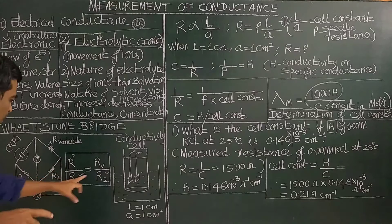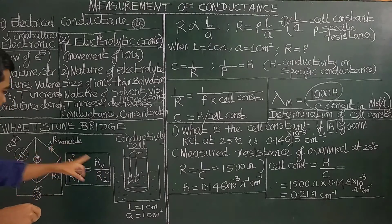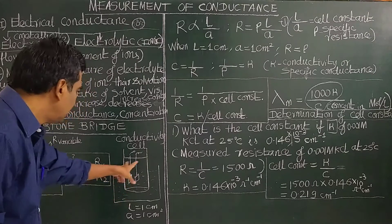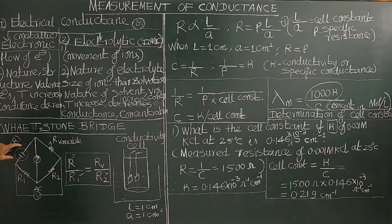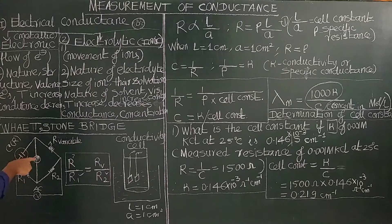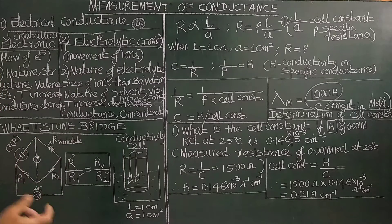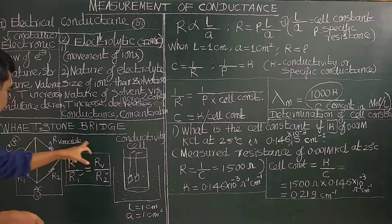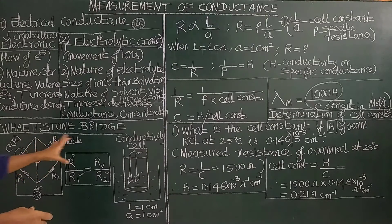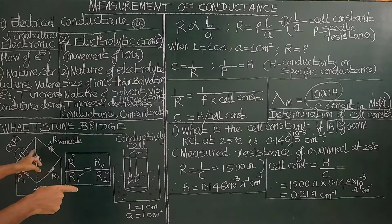In this setup, you have two known resistances R1 and R2. The resistance R3 is a variable resistance. The fourth arm is the electrolytic cell connected to the bridge. The bridge is given an AC power supply. The variable resistance is varied until there is no current — no deflection — in the galvanometer.